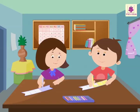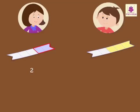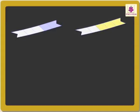Now in the final round, they are coloring the ribbons with different colors. Anaya colored two-fifth of the ribbon and Andy colored three-fourth of the ribbon. Let's find out who colored more. Here the fractions are unlike, with different numerators.